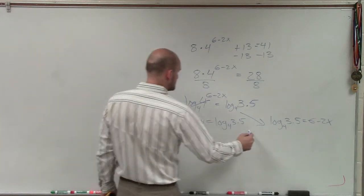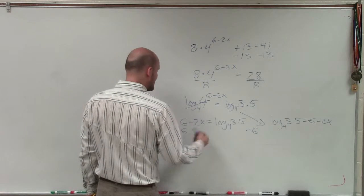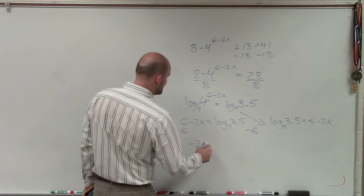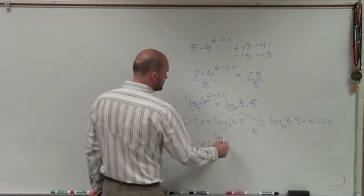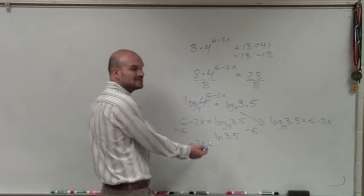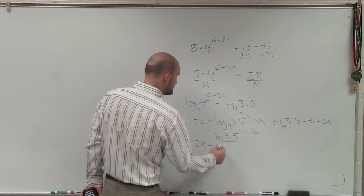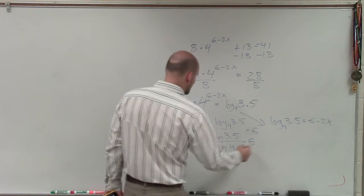So I'll subtract 6, subtract 6, and then divide everything. Well, let's get to that last. So I have negative 2x equals, I'm going to have to use the change of base. So I'll just use change of base with natural logarithm. You don't have to. You could use the common log, log of 3.5. I'm going to use the natural logarithm,